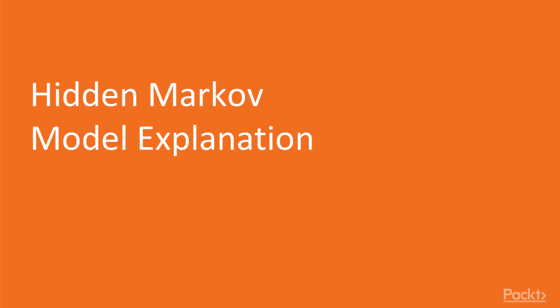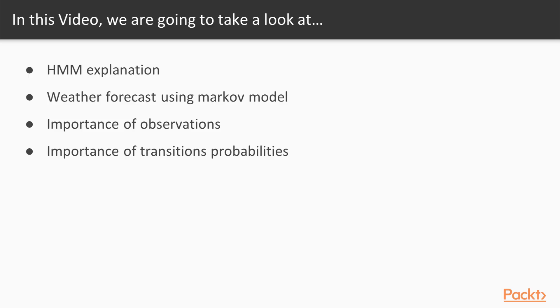This is the first video of our section and it will cover the hidden Markov model explanation. We will start from an explanation, then we'll look at weather forecasting using a Markov model and how it could be achieved. We will see the importance of observations and the importance of transition probabilities.